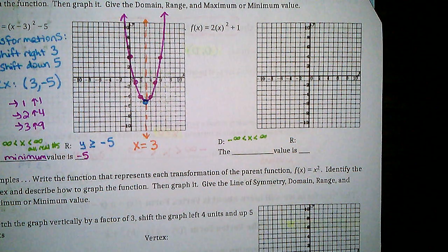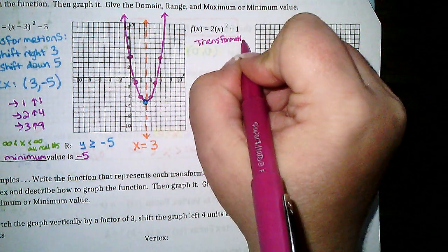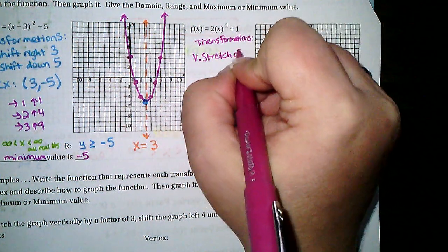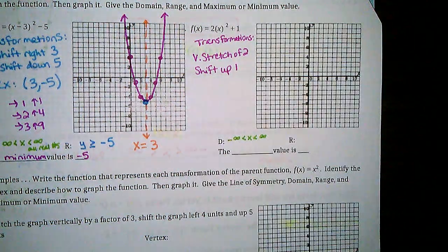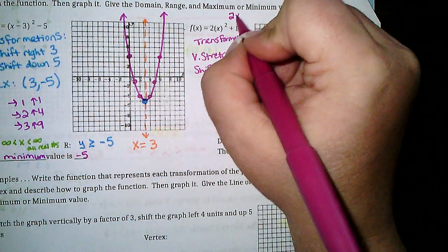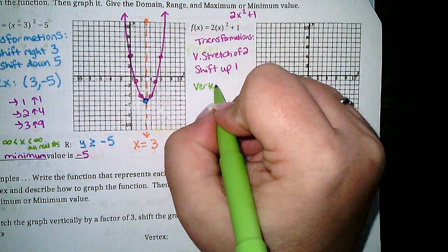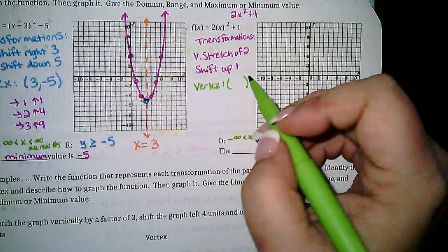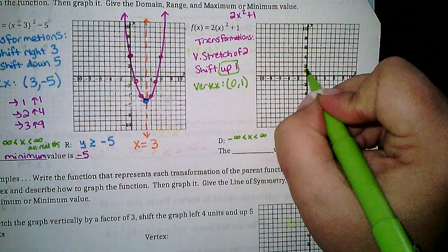Next problem. Transformations on this one: I see a vertical stretch of 2 and a shift up 1. This can also sometimes just be written as 2x squared plus 1. My vertex: any shifts up, down, right, or left change your vertex. I have a shift up 1, so my vertex is going to be at (0, 1). My normal growing pattern is over 1 up 1, over 2 up 4, over 3 up 9 — you need to memorize that or remember to sub in and square.